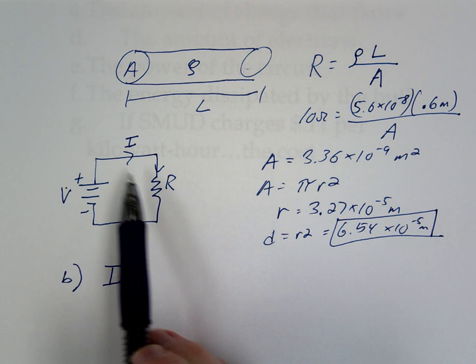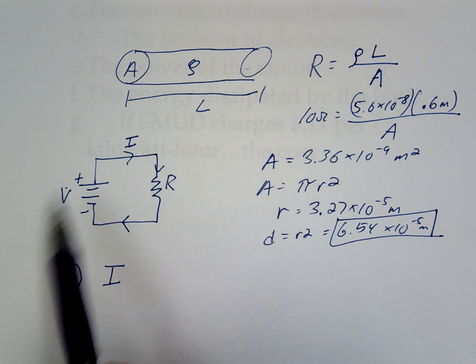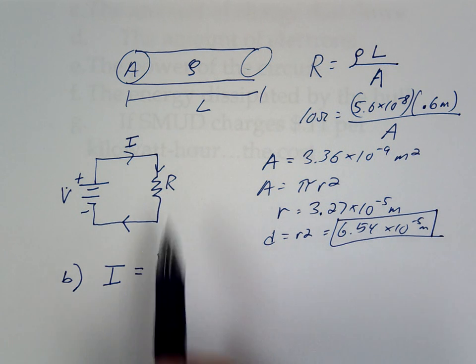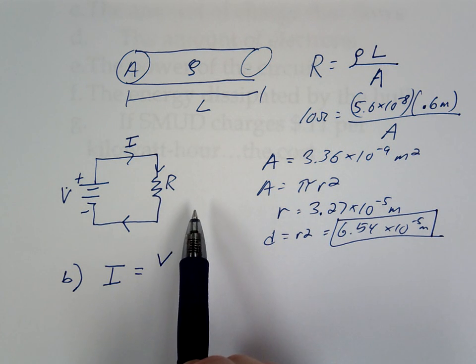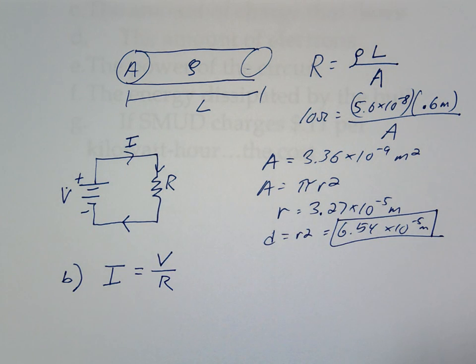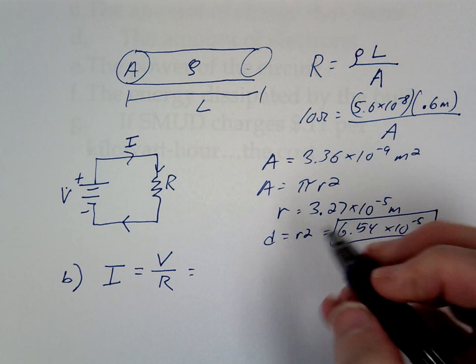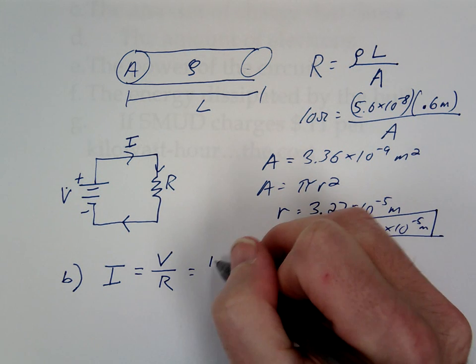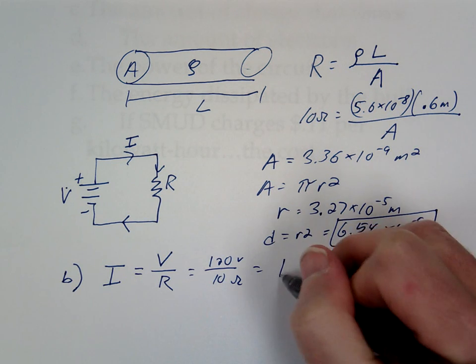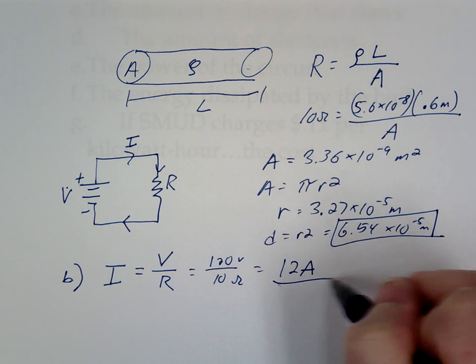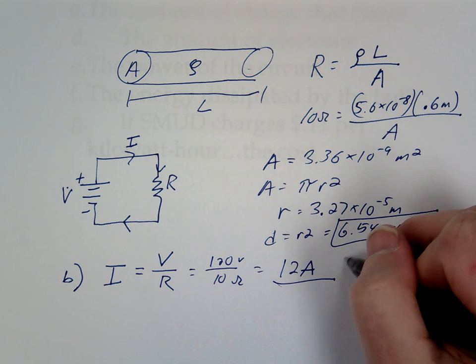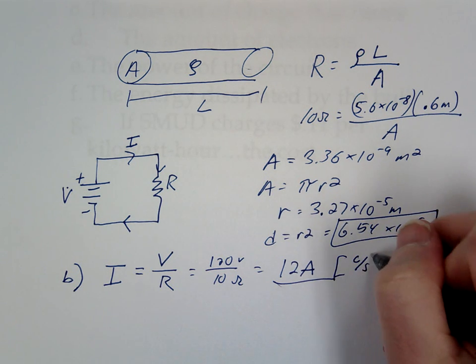So if I increase the voltage, if I use a bigger battery, what should happen to the current? It should increase. If I increase the resistance, use a larger resistor, what should happen to the current? So that's our Ohm's law. All right, for this problem, easy enough. 120 divided by 10 gives us how many amps? Twelve. Units are amps. What is an amp though? Coulombs per second, right. And that's going to help you for the next problem.